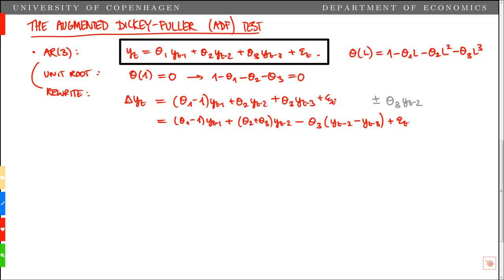The next thing we do is add and subtract (theta2 plus theta3)*yt-1. That gives us theta1 plus this new term we've added, (theta2 plus theta3) minus 1 times yt-1. And then we can write minus (theta2 plus theta3) times (yt-1 minus yt-2).